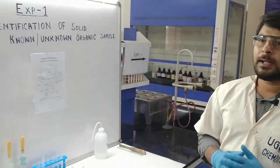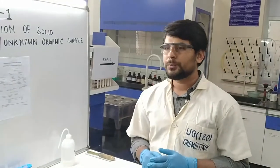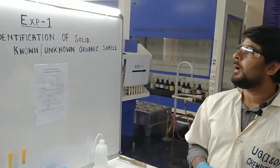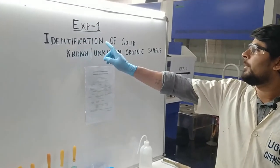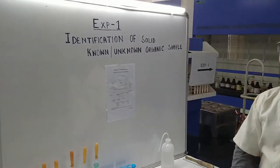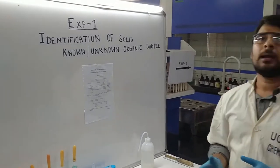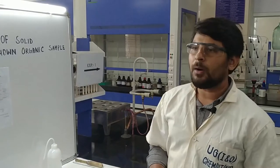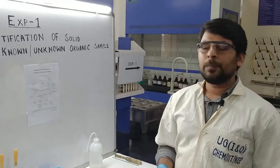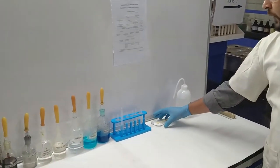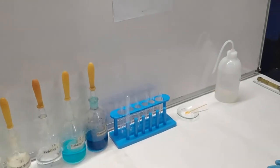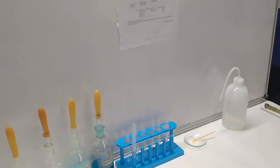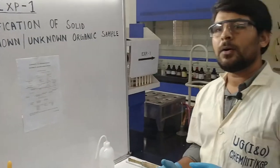Hello students, this is the organic lab and I am going to show you an experiment today - experiment number 1, which is identification of a solid known or unknown organic sample. Generally we do lots of samples during lab time, and today I am going to do a sample that is glucose. I already took some solid glucose, and to start, first we have to perform a preliminary test and then a confirmatory test.